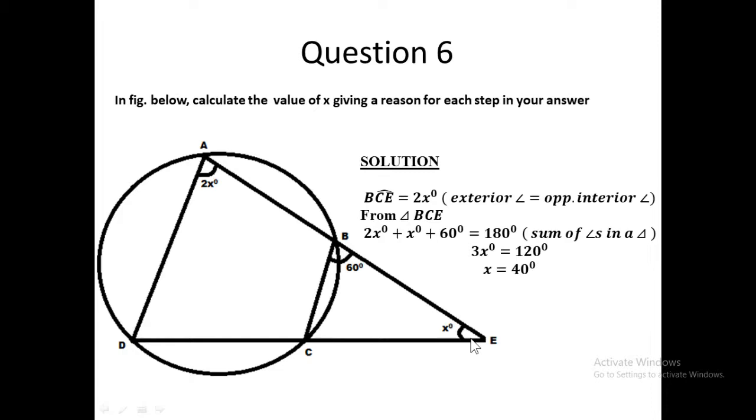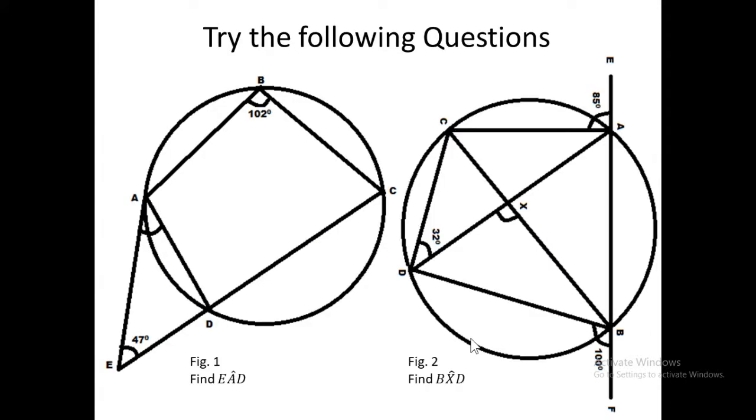On the screen right now you're having two questions that you have to attempt on your own. If you have gone through this training, you should be able to solve these two questions. The first one says in figure one you have to find angle EAD, this angle here. And the second, if you go to figure two, you have to find angle BXD, this angle that is marked there.